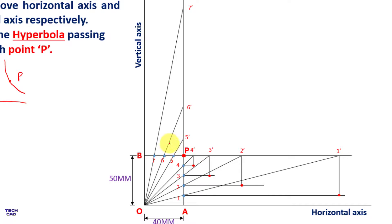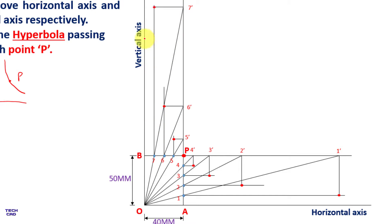From five dash extending toward this side and from five going upward, wherever these meet we have another point. From six dash and six, wherever they meet we have another point for the hyperbola. And from seven dash and seven we get another point. These are all the points we need to join freehand to make the hyperbola passing through point P.